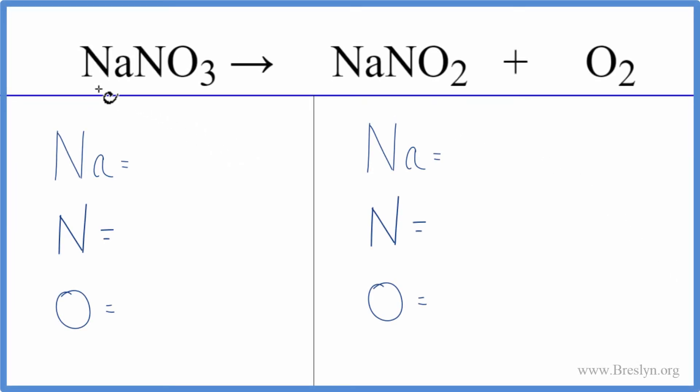To write the balanced equation for NaNO3 decomposing into NaNO2 plus O2, let's count the atoms up.